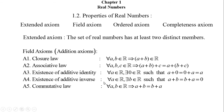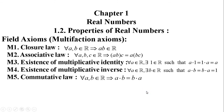For the existence of additive inverse: if a is a real number, then there exists a real number b such that their sum is the additive identity. If a and b are additive inverses to each other, their sum is zero. For example, 2 and minus 2 are additive inverses to each other. All real numbers also satisfy the commutative law: a + b equals b + a.